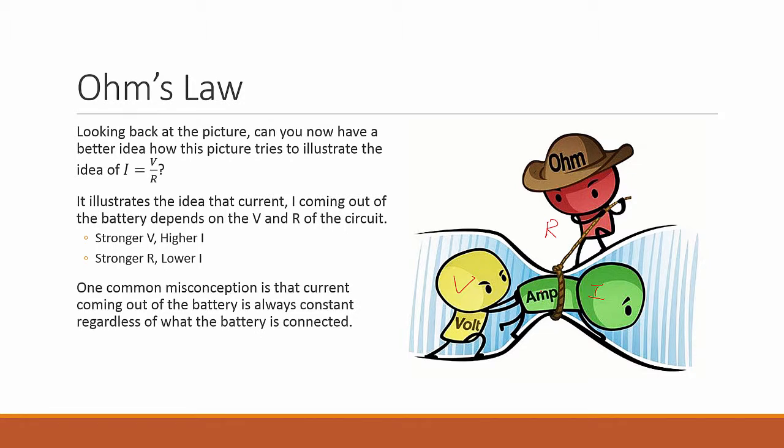One common misconception is that the current coming out of the battery is constant regardless of what the battery is connected. But in fact this is wrong. What is constant is the EMF of the battery, V that is constant.